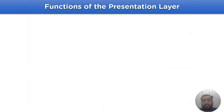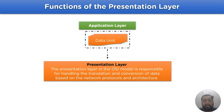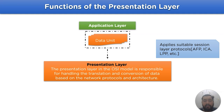Let's take a look at the general functioning of the presentation layer. The application layer will share the data with the presentation layer, where the presentation layer in the OSI model is responsible for handling the translation and conversion of data based on the network protocols and architecture. Some of the protocols applied in the presentation layer are AFP, ICA, and LPP. After which, this processed data from the presentation layer is transferred over to the session layer.